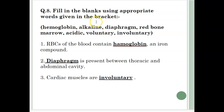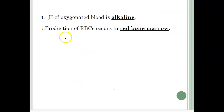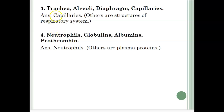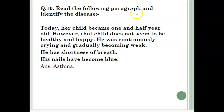Fill in the blanks using appropriate words given in the bracket. RBCs of the blood contain hemoglobin, an iron compound. The diaphragm is present between the thoracic and abdominal cavity. Cardiac muscles are involuntary. Find the odd one out: trachea, alveoli, diaphragm, capillaries — capillaries is the odd one because the others are structures of the respiratory system. Neutrophils, globulins, albumins, prothrombin — neutrophils is the odd one because the others are plasma proteins.